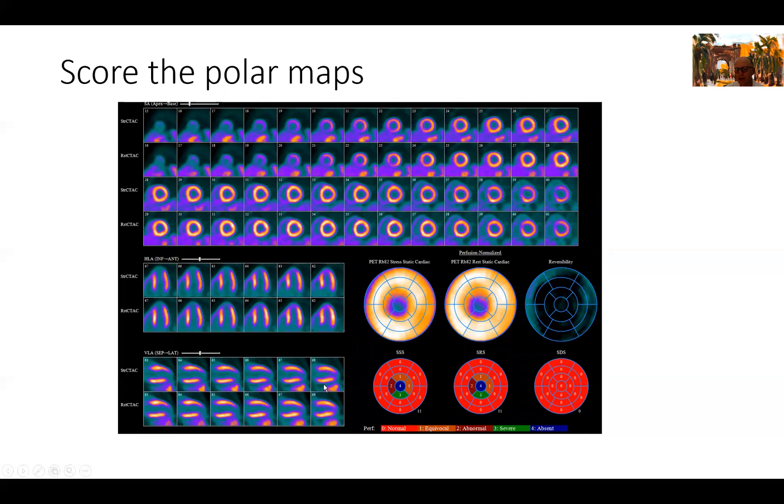We go to coding these images. You can see here we can disagree slightly on whether we call this 2 or 3, 1 or 2, but we can also all agree that we have no uptake in the apex and some of the periapical segments. This is how we finally agreed on calling it by semi-quantitative analysis with a summed stress score of 11, summed rest score of 11, and summed difference score of 0. Summed difference score implicates or indicates ischemia. So there is no ischemia here. We just have a fixed defect.